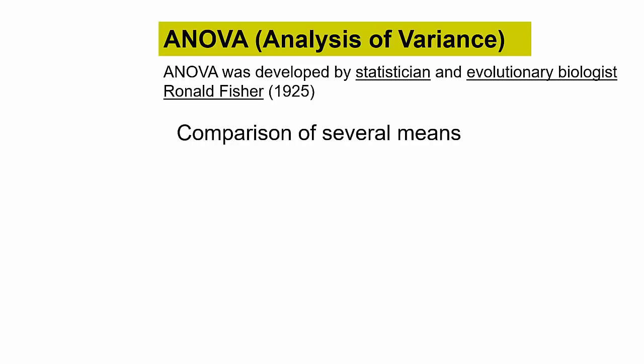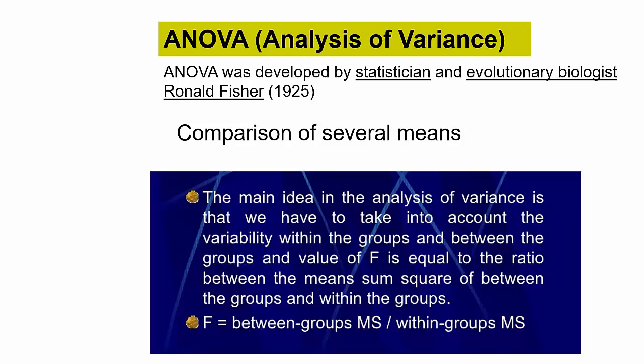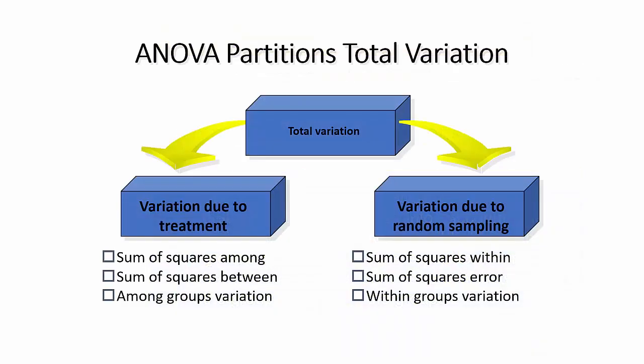The main aim of ANOVA is the comparison of several means. The main idea in the analysis of variance is that we take into account the variability within the groups and between the groups. The F-value is equal to the mean square between the groups divided by the mean square within the groups. ANOVA partitions the total variation into two parts: variation due to treatments and variation due to random sampling.